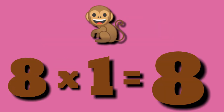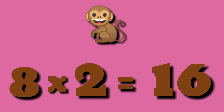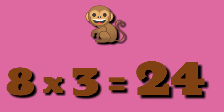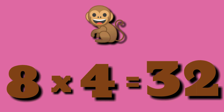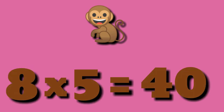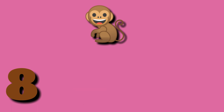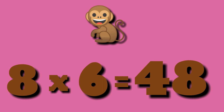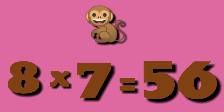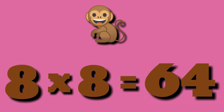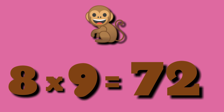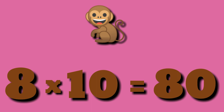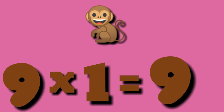Table of 8. 8 ones are 8, 8 twos are 16, 8 threes are 24, 8 fours are 32, 8 fives are 40, 8 sixes are 48, 8 sevens are 56, 8 eights are 64, 8 nines are 72, 8 tens are 80.